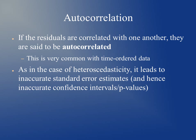Another violation is autocorrelation — when residuals are correlated with one another and are no longer independent. This is very common with time-ordered data where you could have a cyclical pattern. As in the case of heteroscedasticity, it leads to inaccurate standard error estimates because our errors no longer are normally distributed and independent. Because our standard errors are not accurate, we have inaccurate confidence intervals and p-values.